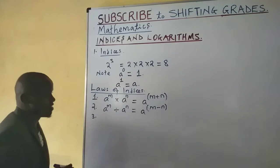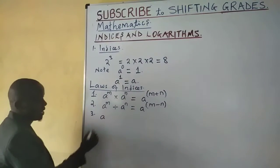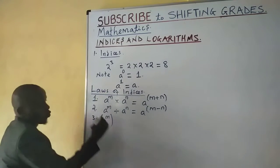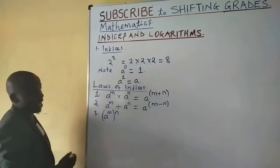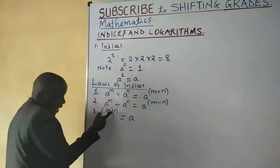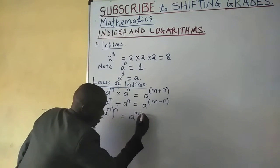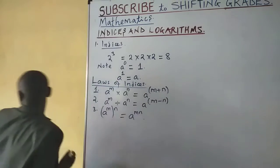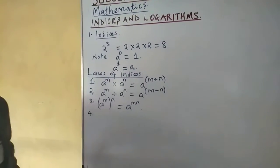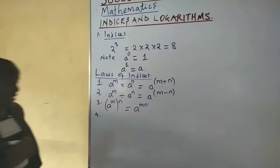We also have the power law which says that if you have a number a raised to power m, and you multiply index by n, the result is a raised to the product of the two indices m times n. Then we have the fourth law, called the negative law.